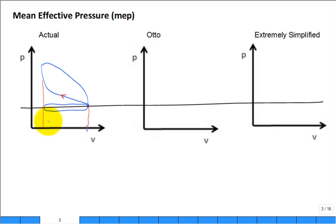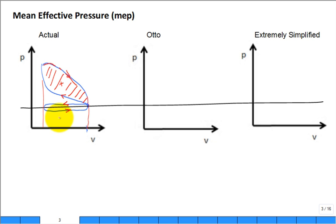If somebody asks what's the power for one whole cycle, you take the boundary work for each stroke. The area under the curve during the power stroke is work in; the area on the other side is work out for the power stroke. Their difference is a hashed area representing positive work out. Similarly, there's work in during the exhaust stroke and a negative pumping area for ingesting and expelling fluid.